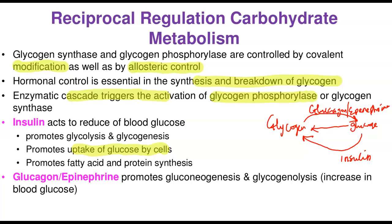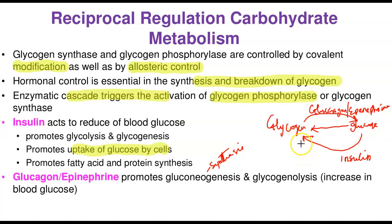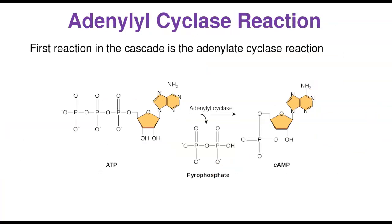Glucagon and epinephrine do the direct opposite of insulin. They promote gluconeogenesis — the synthesis of glucose — so they want glucose to be released into the blood. They also promote the breakdown of glycogen back to glucose so that blood glucose levels rise. These two hormones do exactly the opposite of insulin, which is why we say this regulation is reciprocal.